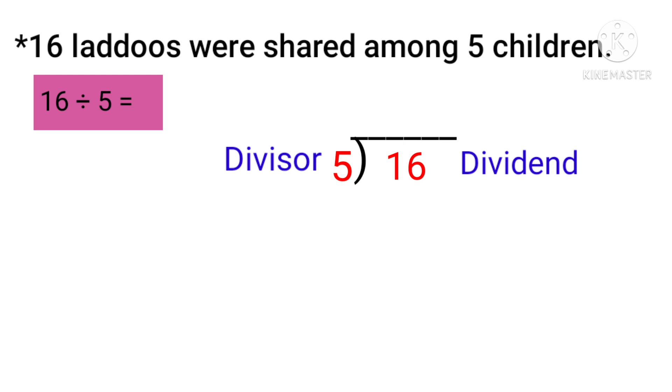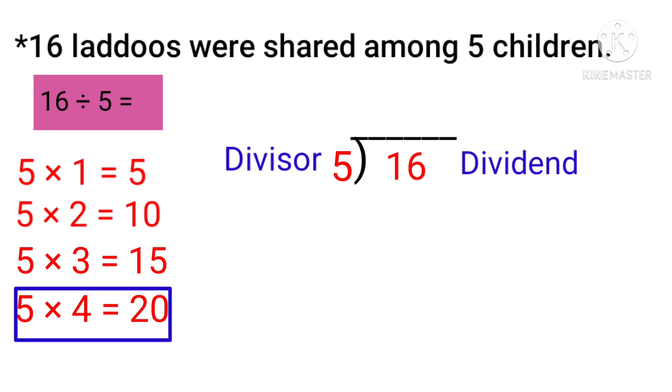Let us say the multiplication table of 5 till we get the product 16. So students, 5 ones are 5, 5 twos are 10, 5 threes are 15, 5 fours are 20. So students, you cannot see 16 number in this table. For example, you can see here 5 fours are 20. 20 is the bigger number than 16. And here, 5 threes are 15. You can see 15 is the smaller number than 16. So we cannot take 20. That's why we will take 5 threes are 15.